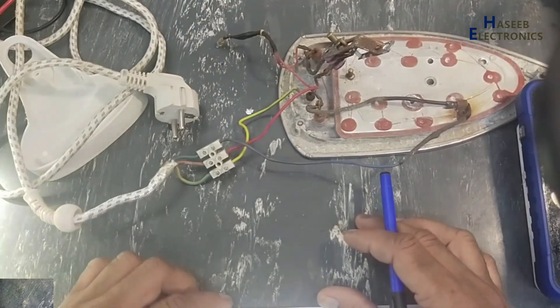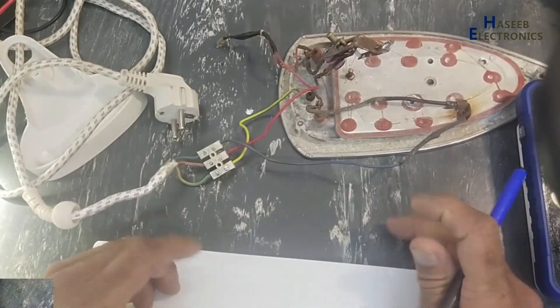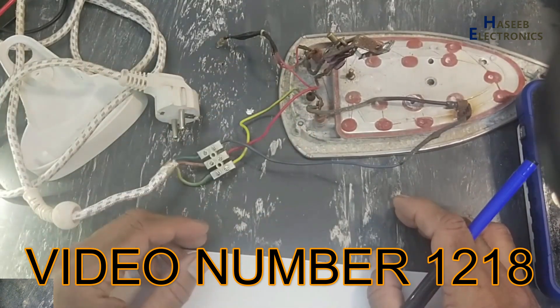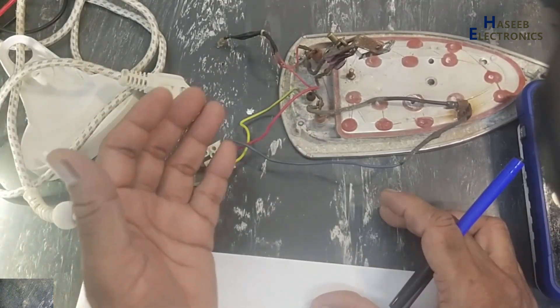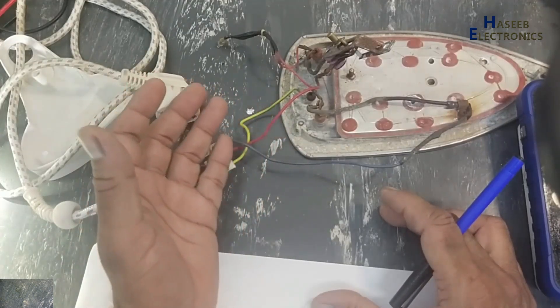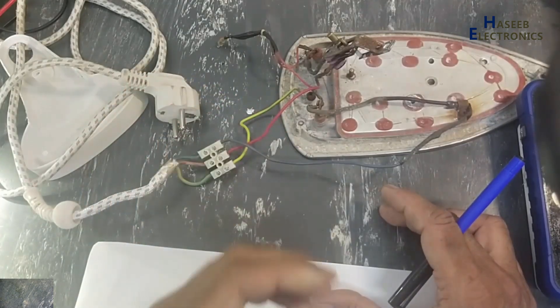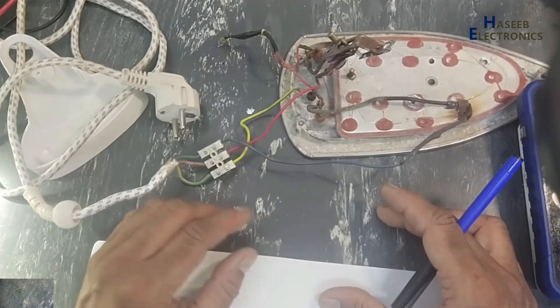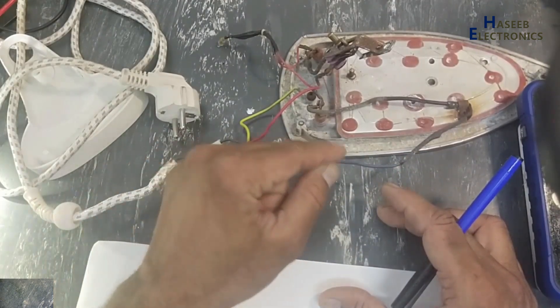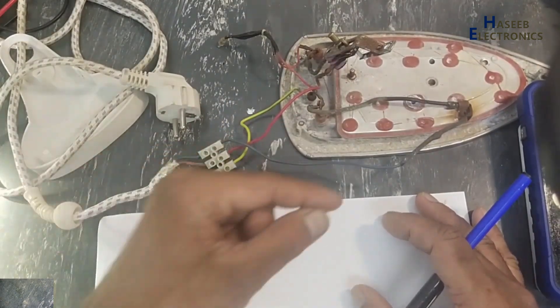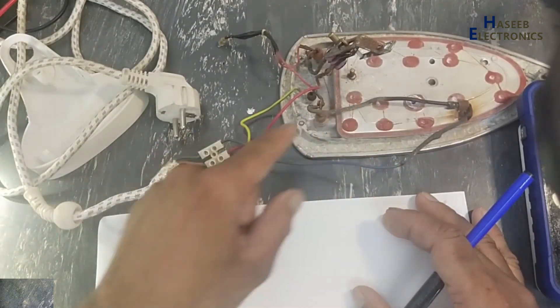Assalamu alaikum friends, welcome back to my channel. In the last video, I opened this electric iron and completed the troubleshooting process. I found many of its items are damaged, so I left the repair process. Today we will see what is the root cause of this failure and what are the electrical connections in this iron.